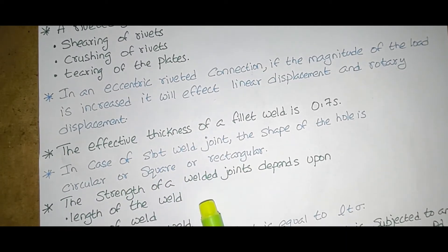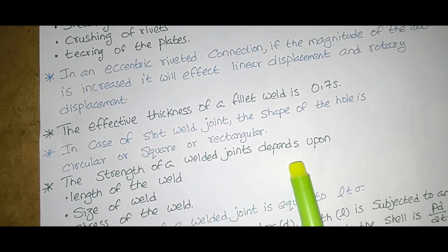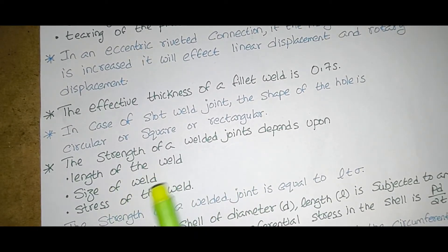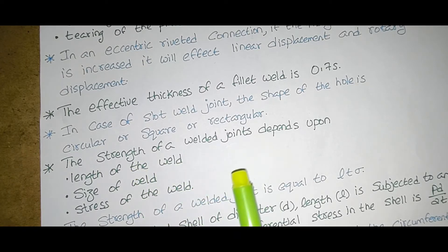The strength of a welded joint depends upon length of the weld, size of weld, stress of the weld. So these are the three parameters that come under the strength of a weld joint.